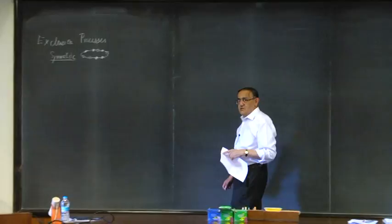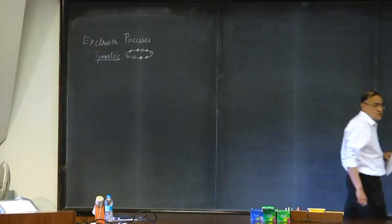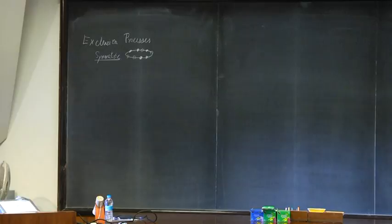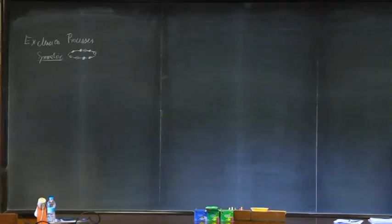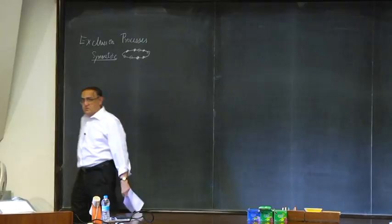Yesterday, amongst other things, we derived the equation of this curve of J versus rho in the asymmetric exclusion process. We found that J was (U minus V) times rho times (1 minus rho), and it had a very nice symmetric form. The symmetric form is also traceable to particle-hole symmetry in this problem.